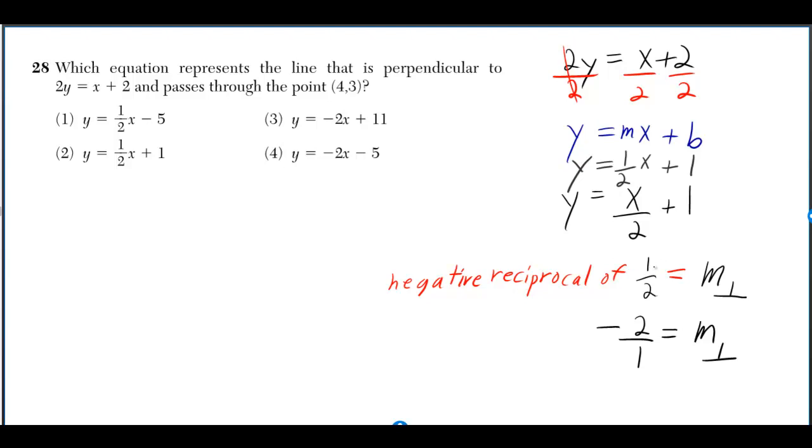Reciprocal means flip, so flip the 1 and the 2, but then negative as well. And then you could have immediately just wrote negative 2 instead of negative 2 over 1.